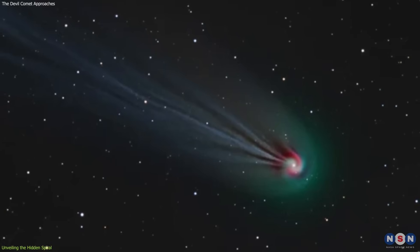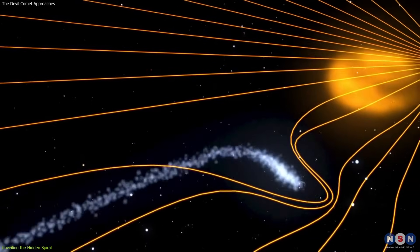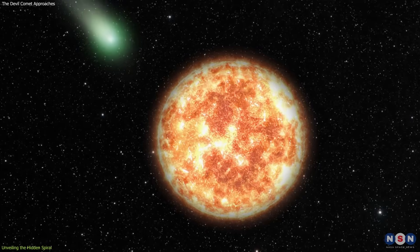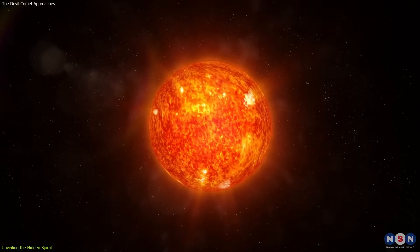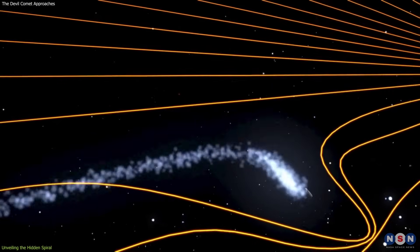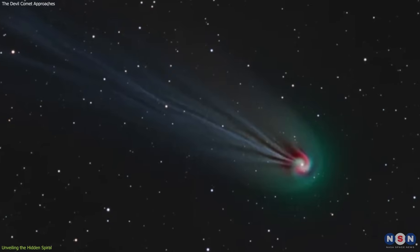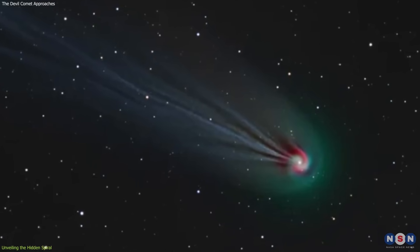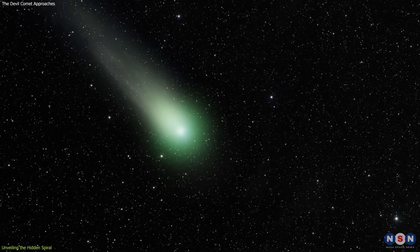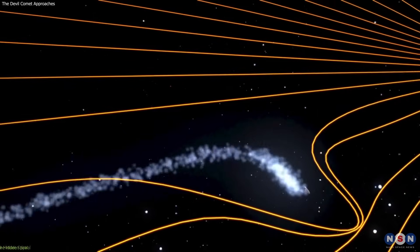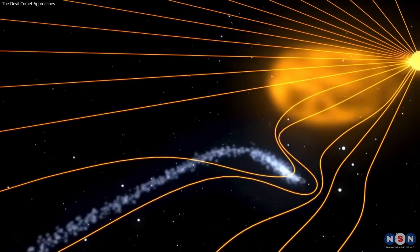The spiral also serves as a natural laboratory for studying the interaction between cometary material and the solar wind. As the comet nears the sun, the solar wind becomes a dominant force, shaping the comet's tail and influencing the structure of the coma. The spiral pattern provides clues about how this interaction unfolds, offering a unique opportunity to study the physics of cometary tails and the effects of solar radiation on cometary material.